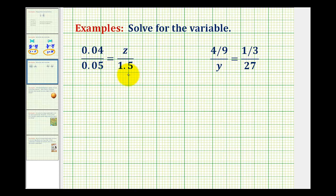We want to solve the following proportions that involve decimals and fractions, and just for some extra practice we'll do these by hand. So we know when we have a proportion, the cross products must be equal. So z times 0.05 must be equal to 0.04 times 1.5.